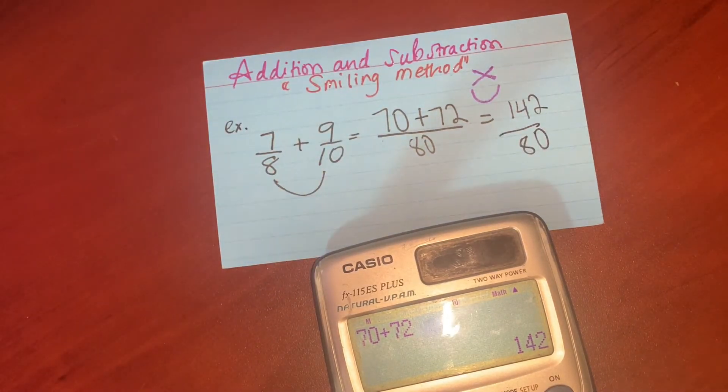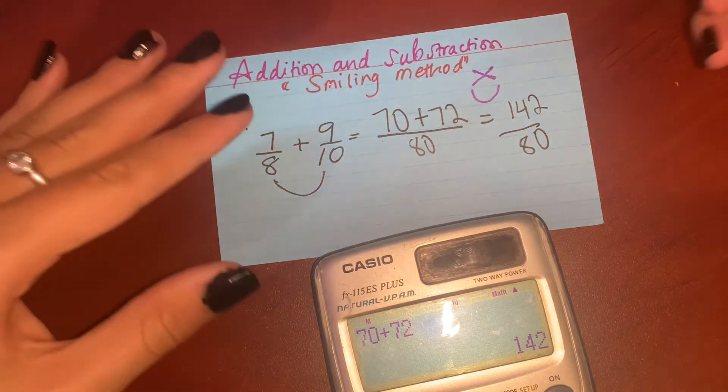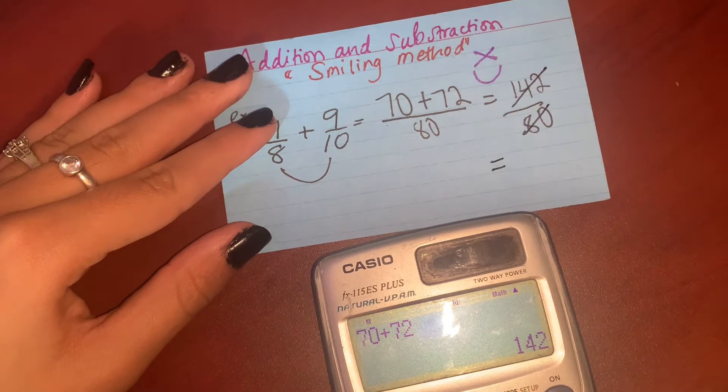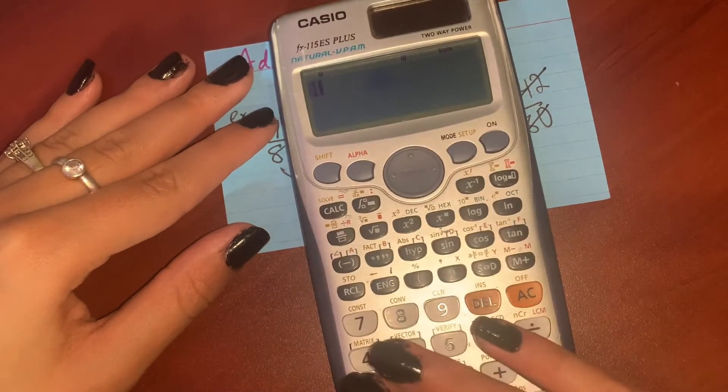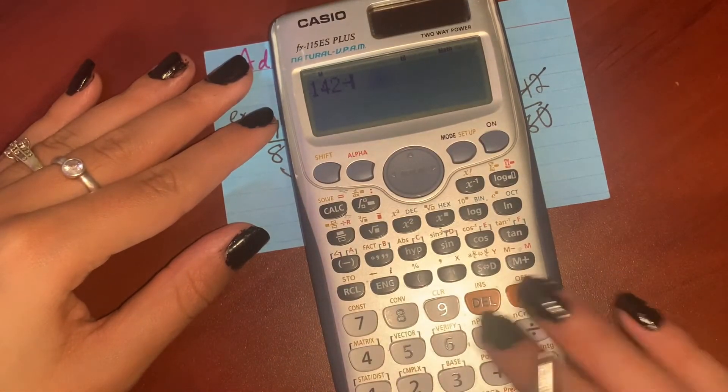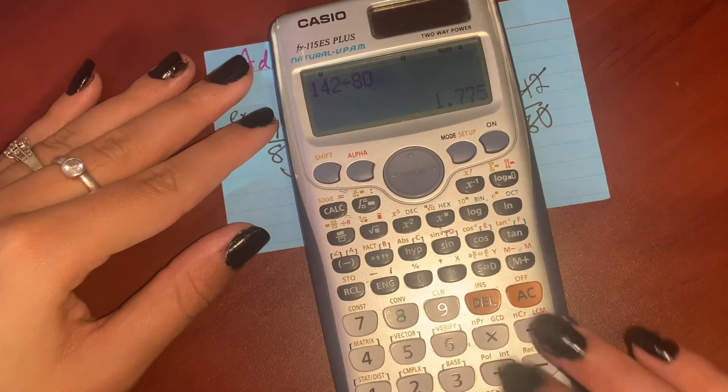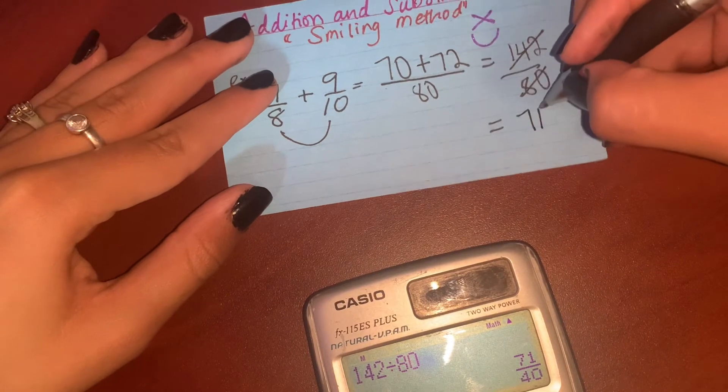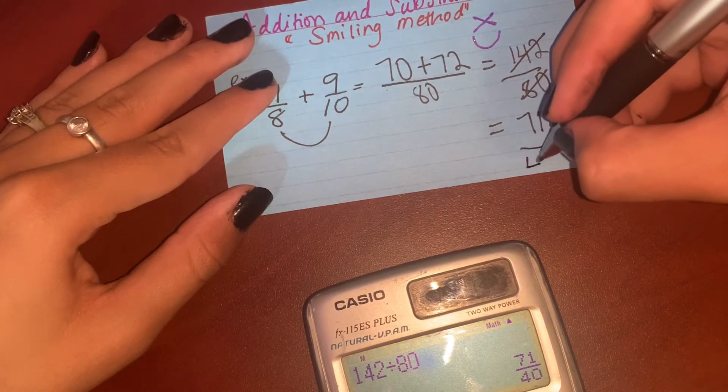Then we can see that we can simplify this further. So we put simplification and we get 142 divided by 80, which simplifies to 71 over 40.